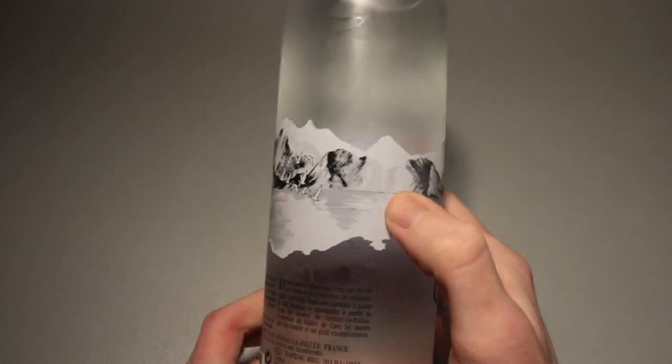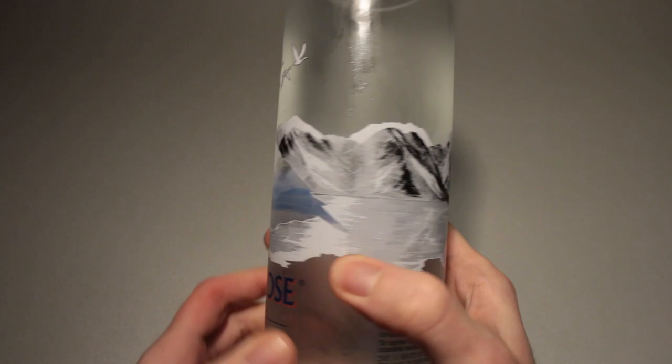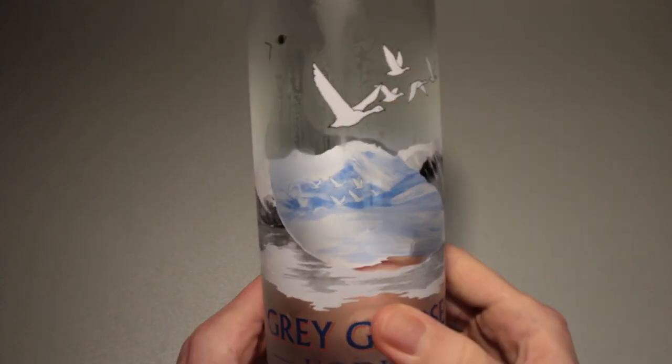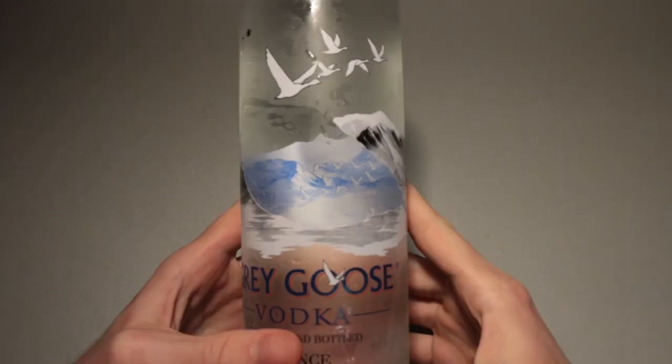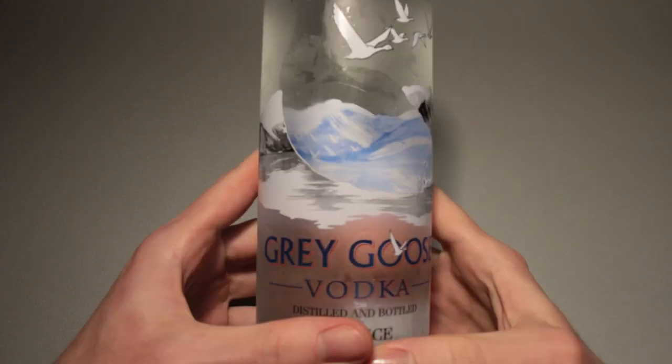We have a mountainous coastline painted all around here with a flock of geese right there in black and white. And then when we look through the goose right in the center we see the entire scenery in blue and white. Overall I have to say that this is probably one of my favorite beverage bottle designs.